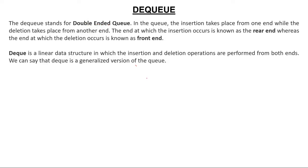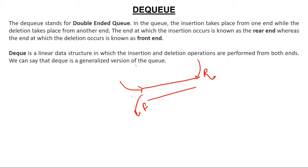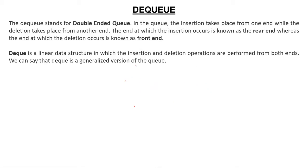Double end means what? In a regular queue, insertion takes place from the rear and deletion takes place from the front. So what is double ended? A double ended queue is a queue in which insertion and deletion both take place from both ends. That is, you can insert from front, you can delete from front, you can insert from rear, you can delete from rear. If you can do both operations from both sides, this type of queue is called a double ended queue. DQ is a linear queue structure in which insertion and deletion operations are performed at both ends.